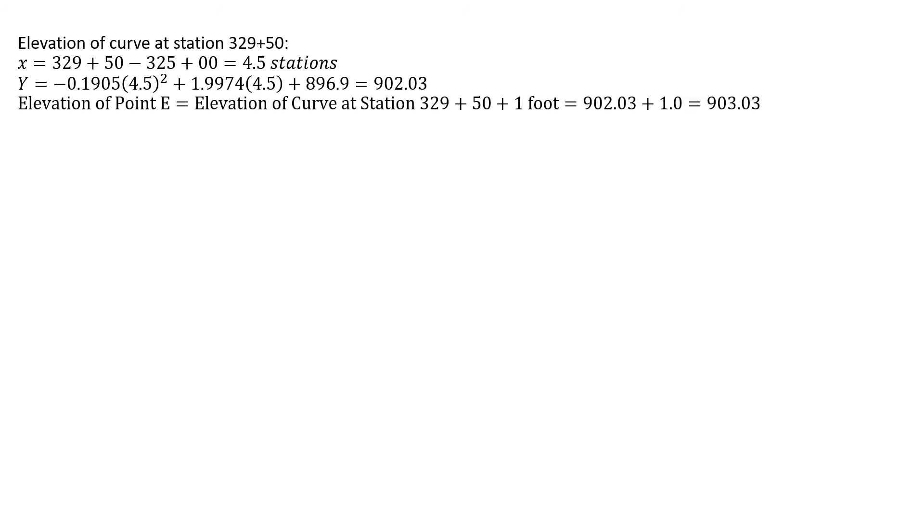The elevation for our point E is that elevation plus one foot. That's what we were told in our problem statement. So we're going to take our existing curve of 902.03 feet, add one foot to it. We're going to have a point that we're trying to fit the curve through of 903.03 feet. That's point E.